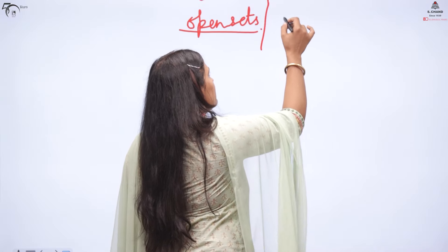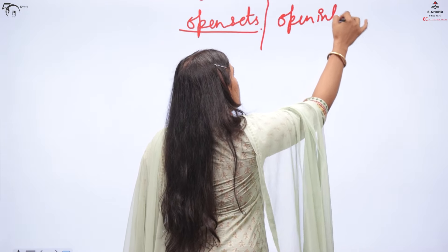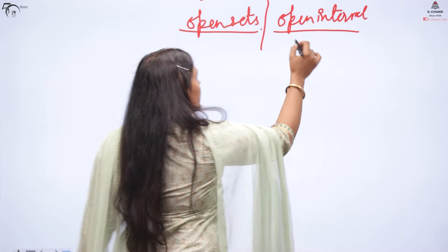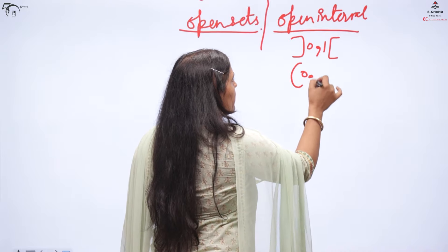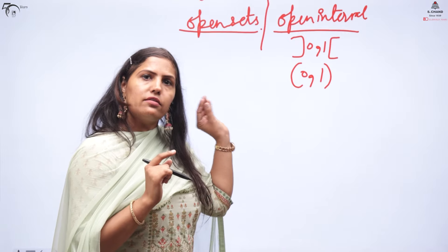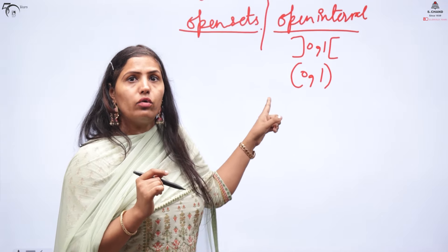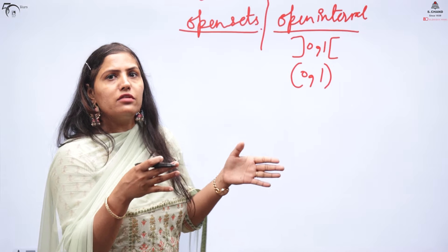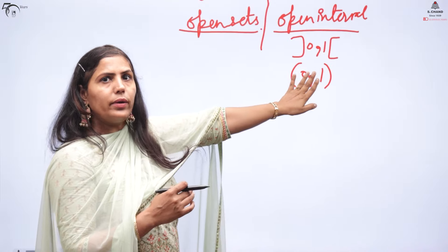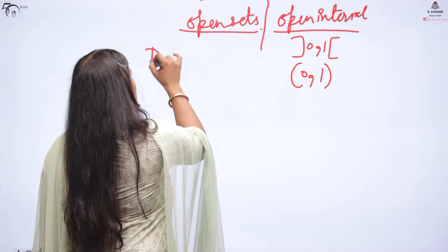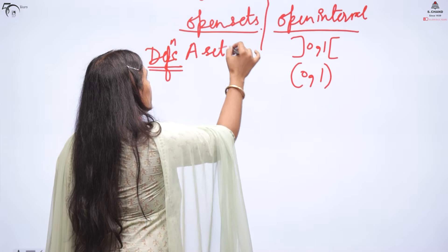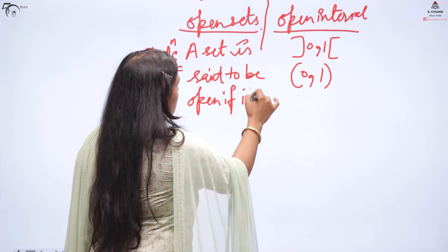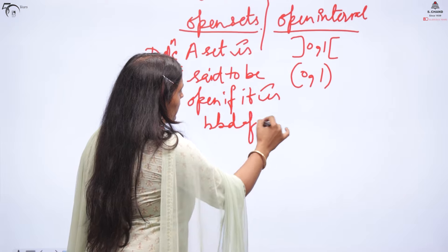Now coming to open sets. There is a big difference between open interval and open set. An open interval like (0,1) means boundary points are excluded. An open set is defined as: a set is said to be open if it is a neighborhood of each of its points.